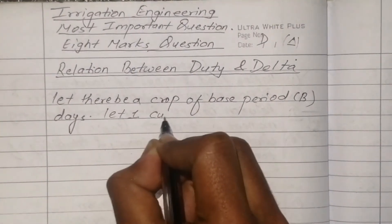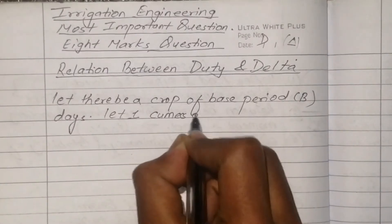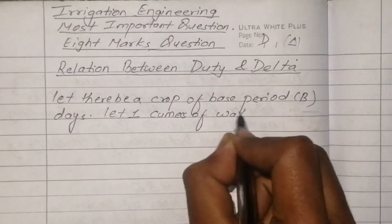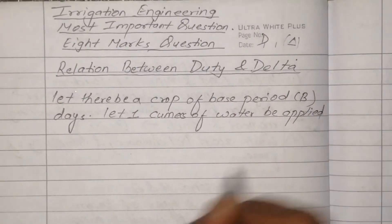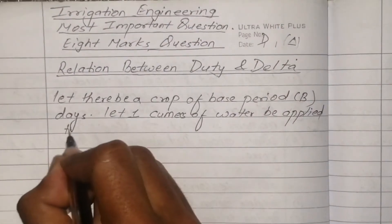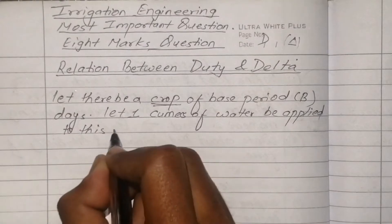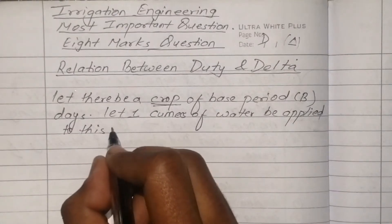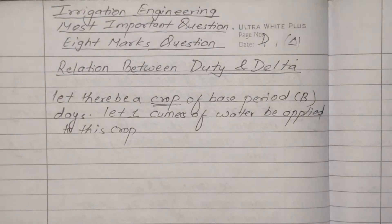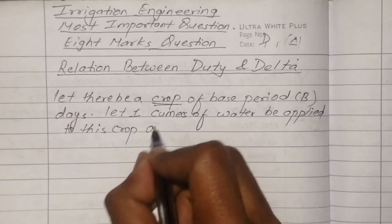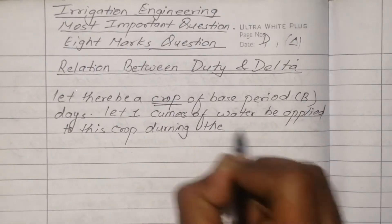Let 1 cumec of water be applied to the crops during the entire base period of B days.